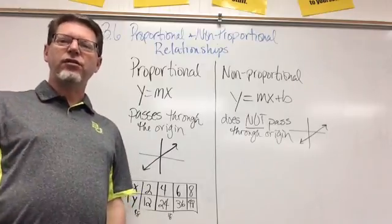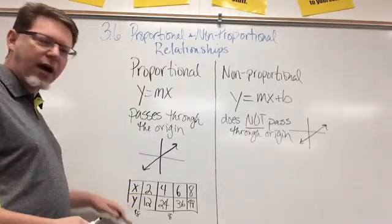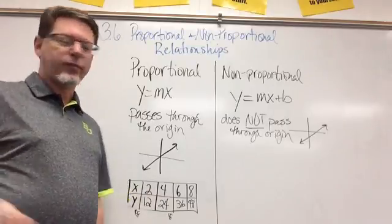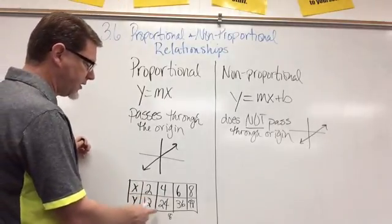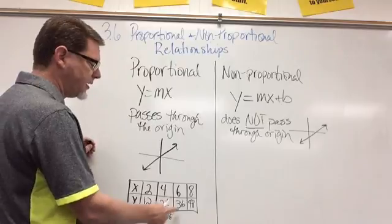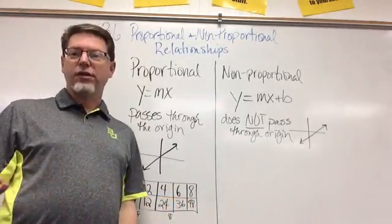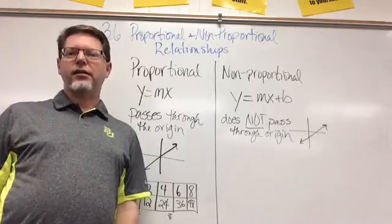The other thing you can look at is if you take every y over x and you get the same simplified value, then it's also proportional. 12 divided by 2 is 6. 24 divided by 4 is 6. 36 divided by 6 is 6. And 48 divided by 8 is 6. All of those are the same, so that makes it proportional.